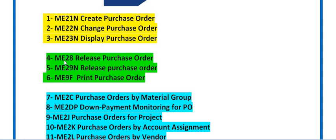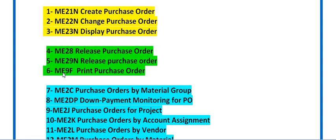Some companies also use ME28 — both ME29N and ME28 are used for releasing the purchase order. Once you release the purchase order, you can print it using ME9F. You can save the purchase order in PDF format and share it with vendors.